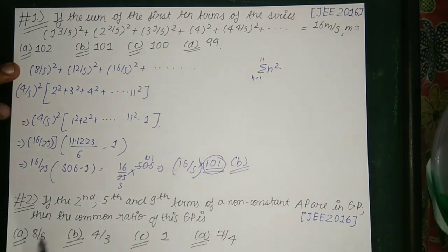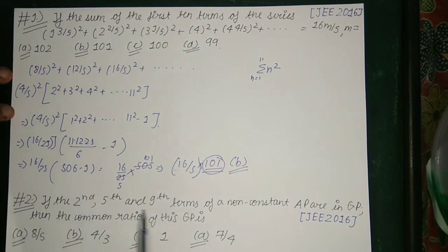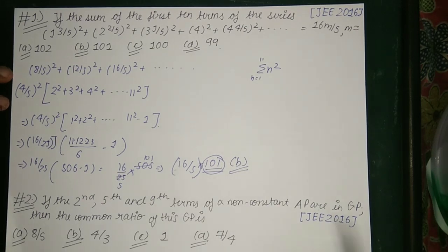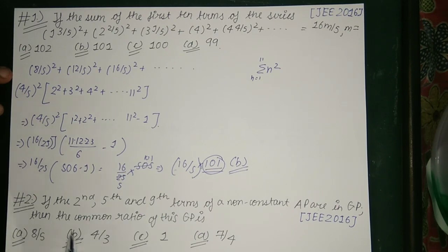Now let's look at the next question. If the 2nd, 5th, and 9th terms of a non-constant AP are in GP, then the common ratio of this GP can be given by: option A: 8/5, option B: 4/3, option C: 1, and option D: 7/4.